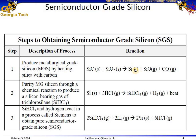Step 2 is conversion to trichlorosilane. The metallurgical-grade silicon, which is 98% pure, is further purified through a chemical reaction with hydrogen chloride, forming trichlorosilane gas, which is a key intermediate in the purification process.